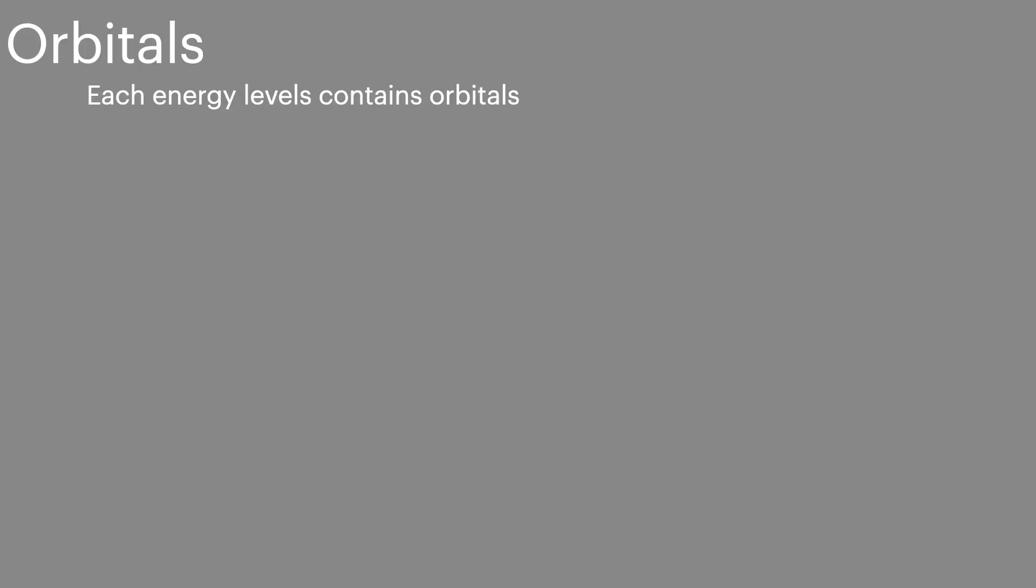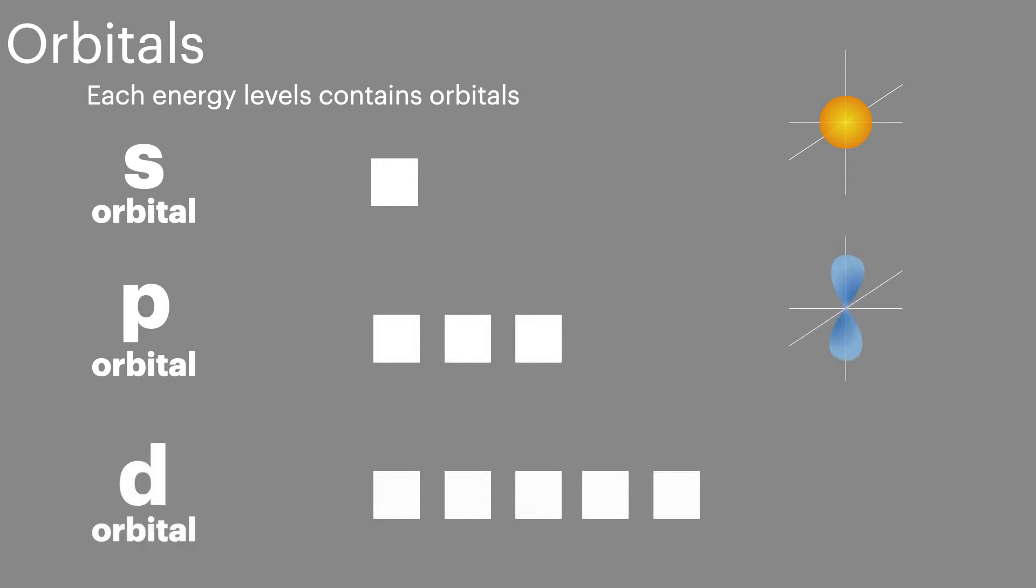A quick reminder: each energy level contains different types of orbitals. An S orbital is the lowest in energy and can hold two electrons. A P orbital has more energy than the S orbital and can hold six electrons. And the D orbital is the highest energy orbital that we look at at the AQA A-level specification and can hold ten electrons in its sub-orbitals.